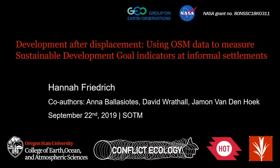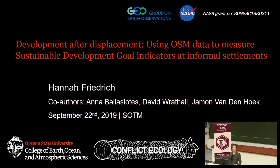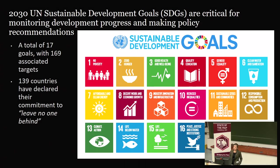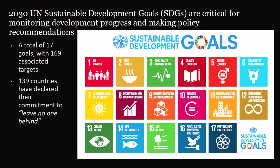The title of the talk is 'Development After Displacement: Using OSM Data to Measure SDG Indicators at Informal Settlements.' The 2030 UN Sustainable Development Goals, first collated in 2015, are critical for monitoring development progress and making policy recommendations leading up to 2030. There are a total of 17 goals, ranging from decreasing food insecurity, increasing accessibility to healthcare and education, equalizing gender opportunities, as well as making conscious efforts for ecosystem and conservation. These 17 goals have a myriad of indicators and a total of 169 targets.